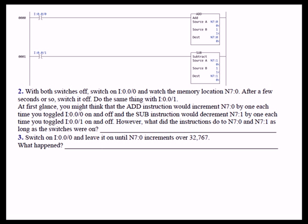However, these instructions actually execute every single program scan that they're true. So the add instruction and the subtract instruction execute each true scan — which means every scan, a thousand times a second, it's going to add one to N7:0. That basically means rung zero is acting as a scan counter, incrementing on every single program scan. So if you only wanted to add source B to source A once, you have to use a one-shot.